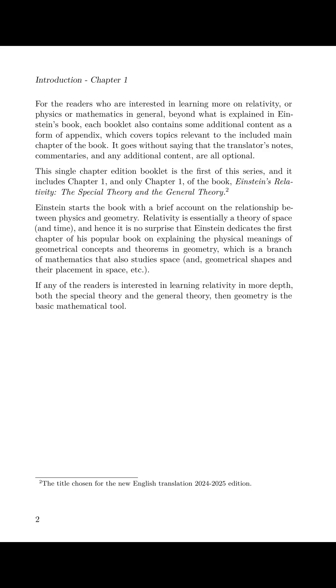This single-chapter edition booklet is the first of this series, and it includes Chapter 1 and only Chapter 1 of the book, Einstein's Relativity: The Special Theory and the General Theory. Einstein starts the book with a brief account on the relationship between physics and geometry. Relativity is essentially a theory of space and time, and hence it is no surprise that Einstein dedicates the first chapter of his popular book on explaining the physical meanings of geometrical concepts and theorems in geometry, which is a branch of mathematics that also studies space and geometrical shapes and their placement in space.